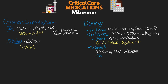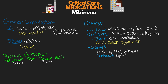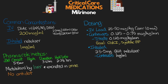Quickly for pharmacokinetics: when given IV, Milrinone has an onset of 5 to 15 minutes, a duration of 3 to 6 hours, and a half-life of 2 to 2.5 hours. It is metabolized by the liver and excreted in the urine. There is no antidote for this medication.